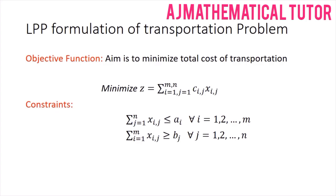For the constraints: each source has a supply constraint — the total shipped from a source cannot exceed its available supply, so these are less-than-or-equal-to constraints. Each destination has a demand constraint — its minimum demand must be fulfilled, so these are greater-than-or-equal-to constraints. Finally, non-negativity restrictions ensure xij ≥ 0, since they represent number of units. This completes the LPP formulation of the transportation problem.